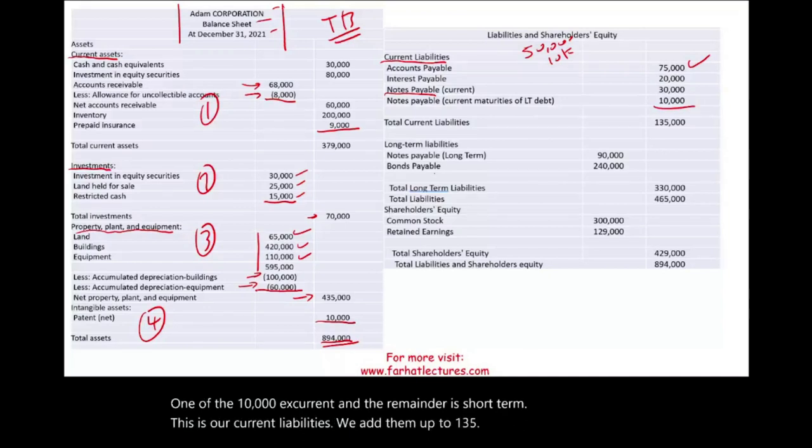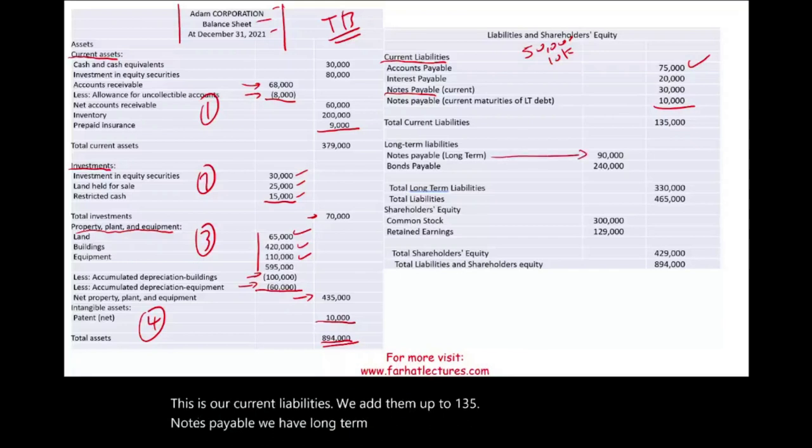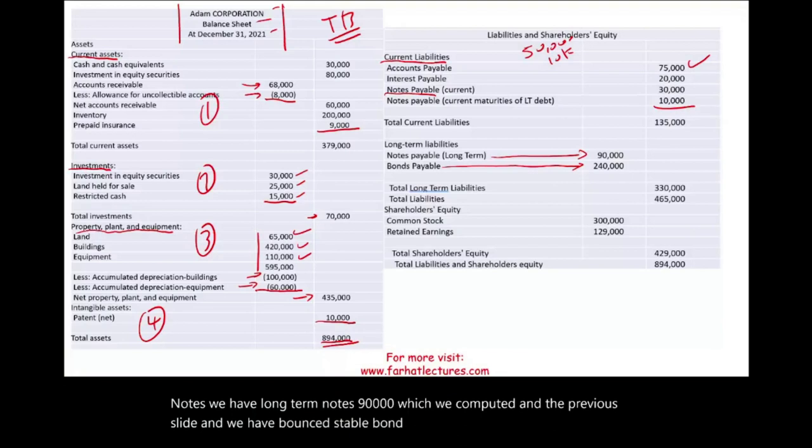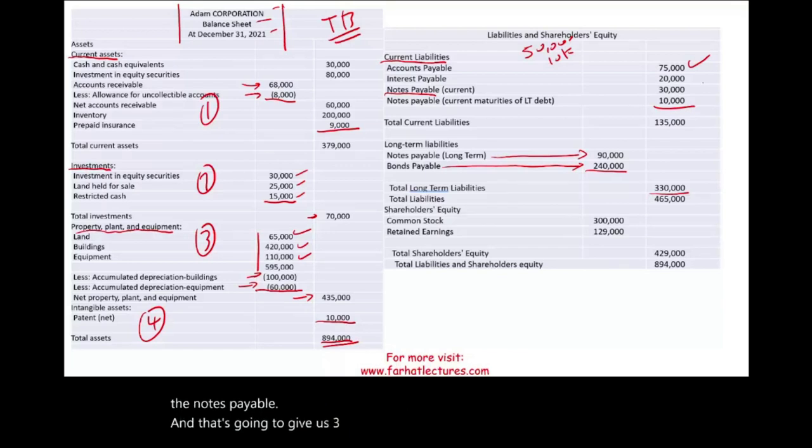Notes payable. We have long-term notes, $90,000, which we computed in the previous slide. And we have bonds payable. Bonds payable is long-term, $240,000. We add up the notes payable, and that's going to give us $330,000. The liabilities are broken down into two sections, current and long-term.